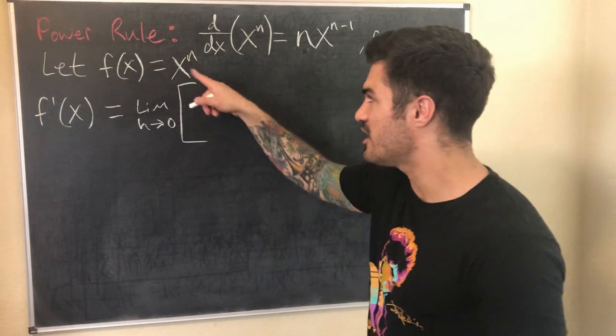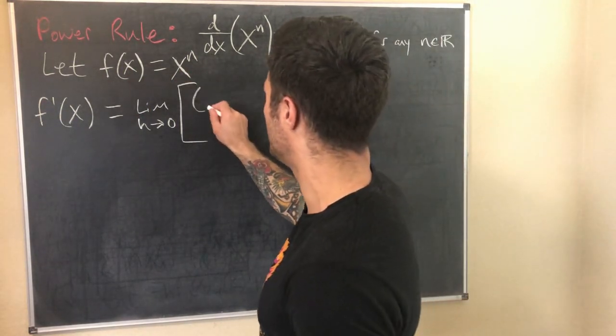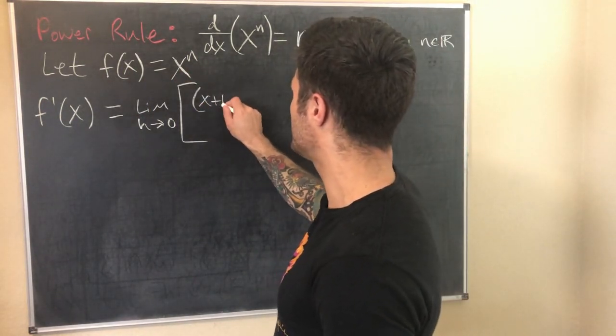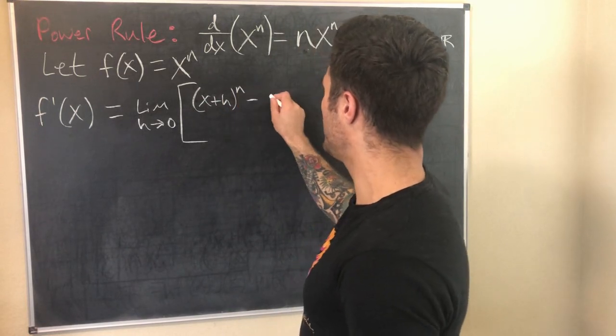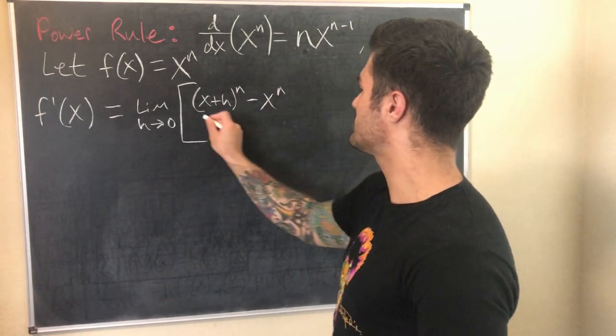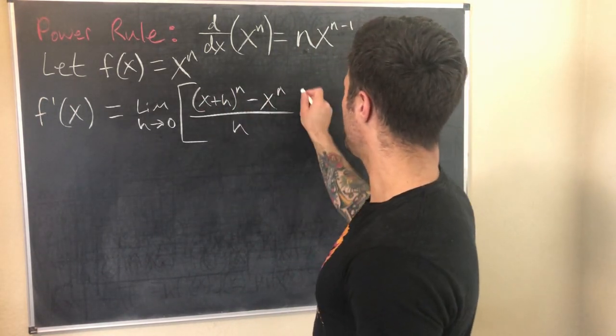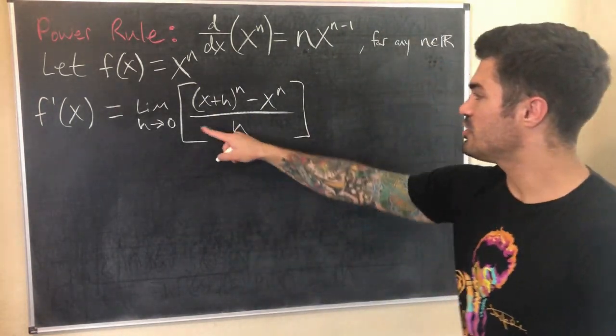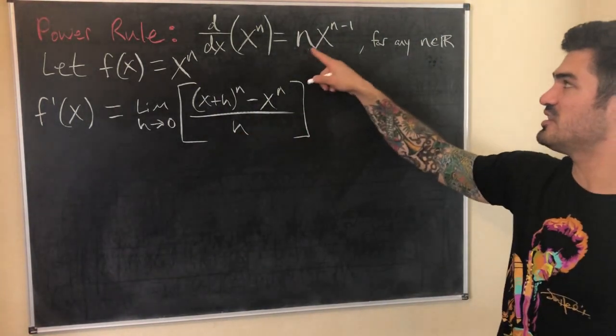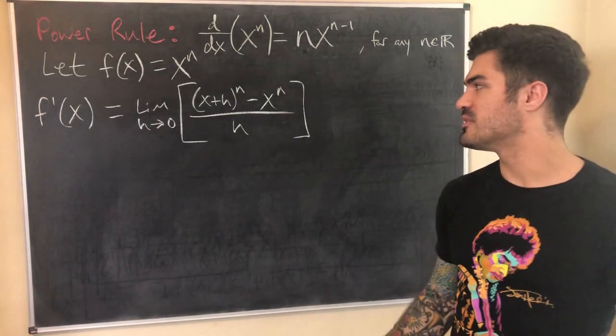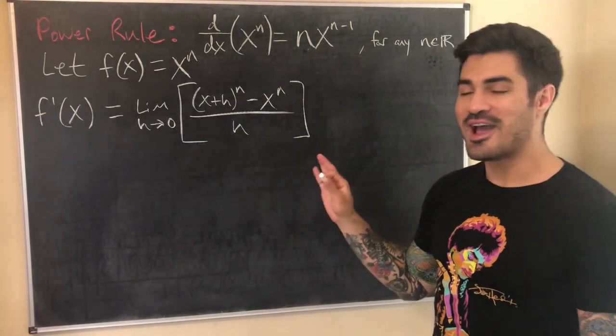So what is f(x+h)? I plug x plus h in, I get (x+h) to the n. So I have (x+h)^n minus f(x), that's just x^n, all over h. And what I want to show is that this limit equals n times x to the n minus 1.